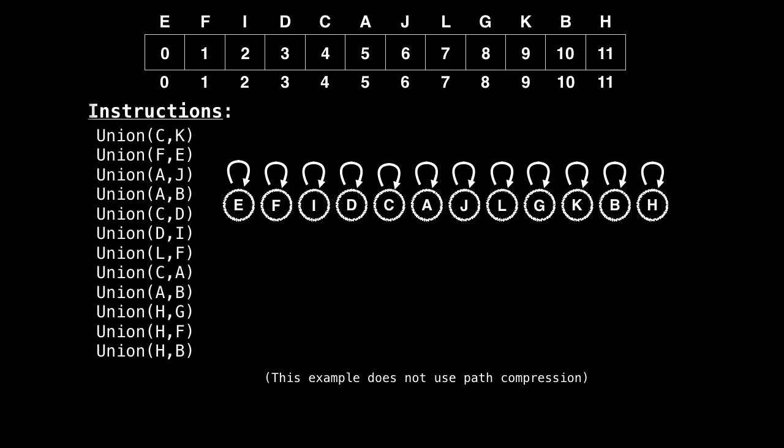But as we perform the instructions on the left of unifying groups together, or objects together into groups, we're going to change the values in our array to map to other letters. Specifically, the way we're going to do it is for some index i in our array, index i's parent is going to be whatever index is at position i.